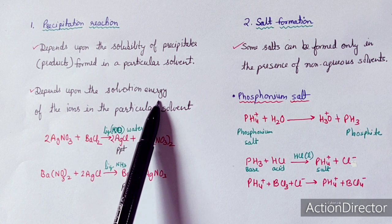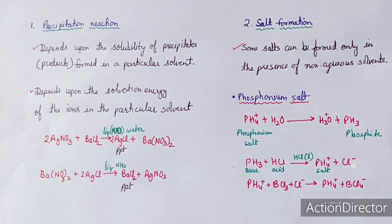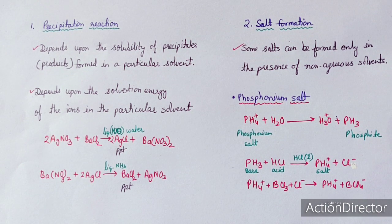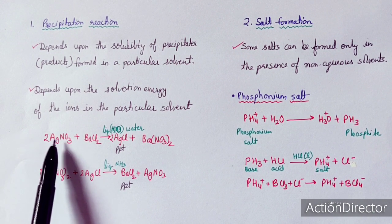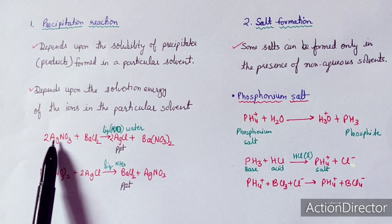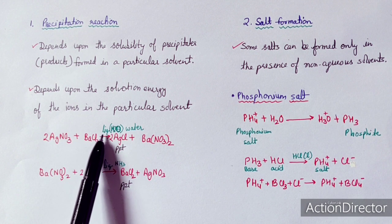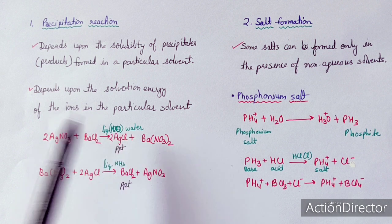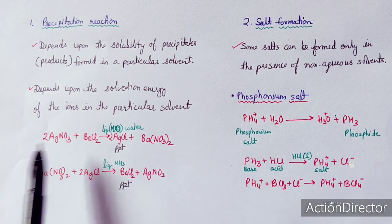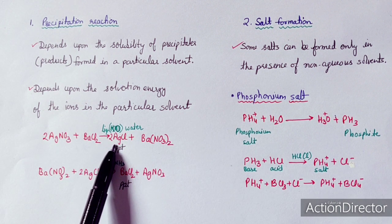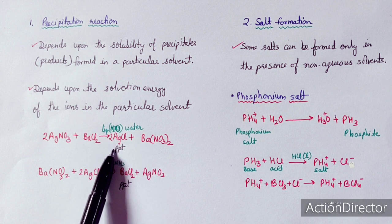Solvation energy means dissolution. Greater the solvation energy, greater the dissolution, and less the precipitation. Precipitation happens when the product is insoluble in the particular solvent. For example, when AgNO3 is added to BaCl2 in the presence of water, AgCl white precipitate forms and Ba(NO3)2 remains in solution, because AgCl is insoluble in the water system.